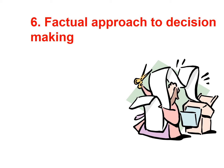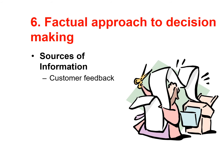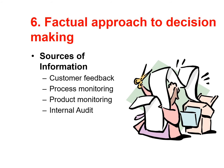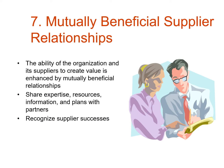A factual approach to decision making is enormously important. Sources of information include customer feedback, process monitoring, product monitoring, internal audit, self-assessment and suggestions. Using evidence in decision making ensures whatever decisions you make are backed up and made on firm foundations. Developing mutually beneficial relationships also matters: the ability of the organisation and suppliers to create value is enhanced by such relationships, co-creating value by sharing expertise, resources, information and plans with partners. It's also important to reward and recognise supplier success and celebrate achievement so that everybody achieves more.